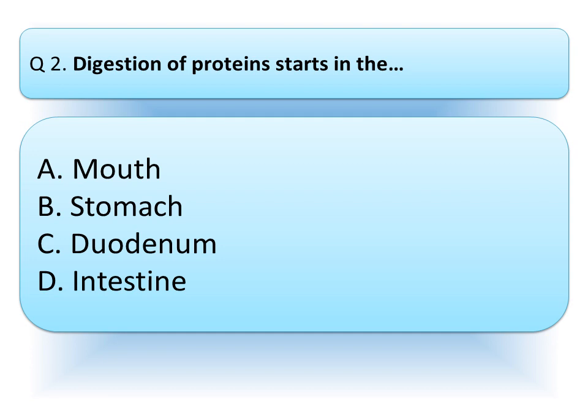Our next question is: digestion of proteins starts in — and read the options very carefully: option A, Mouth; option B, Stomach; option C, Duodenum; or option D, Intestine. Think about the correct answer and write your answer in the comment box.